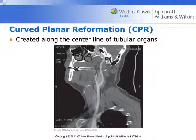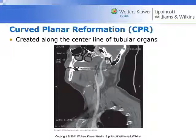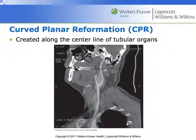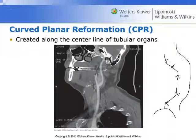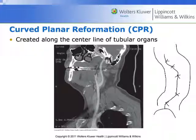Curved planar reformats are created along the center line of a tubular organ, and techs are manually putting in waypoints for the machine to create a curvilinear image format plane. Here's an example of the entire carotid artery — more or less from the arch of the aorta up into the brain — done in a curved planar reformat. They've put waypoints along the length of the carotid artery to tell the machine exactly how it should be reformatting, creating a plane of reformatting that follows the vessel, so as it slices through the anatomy, we get a single slice with the entire carotid artery on it.